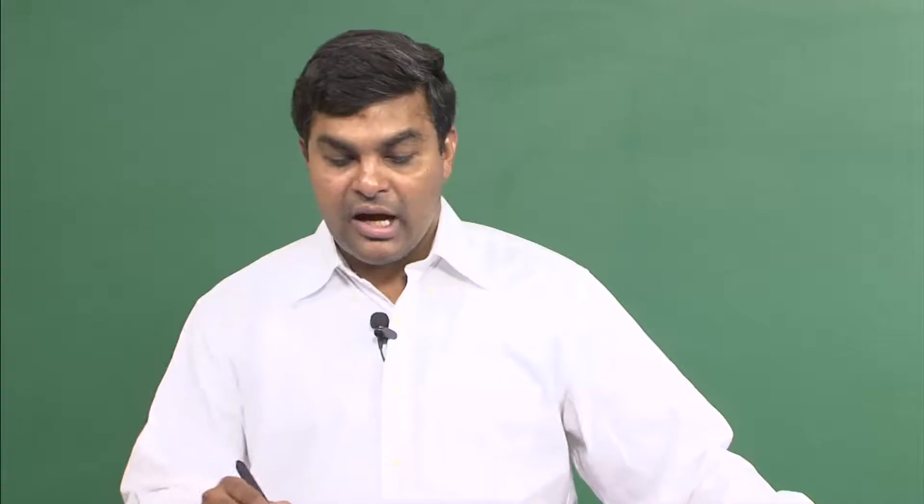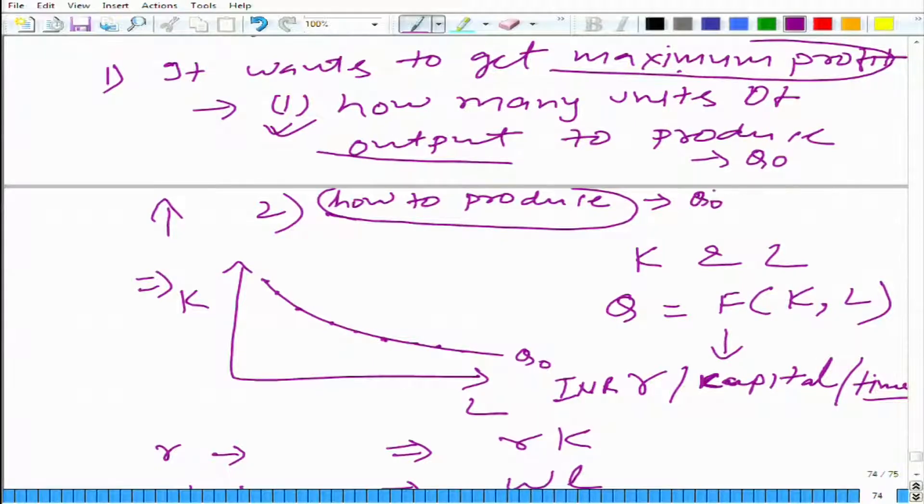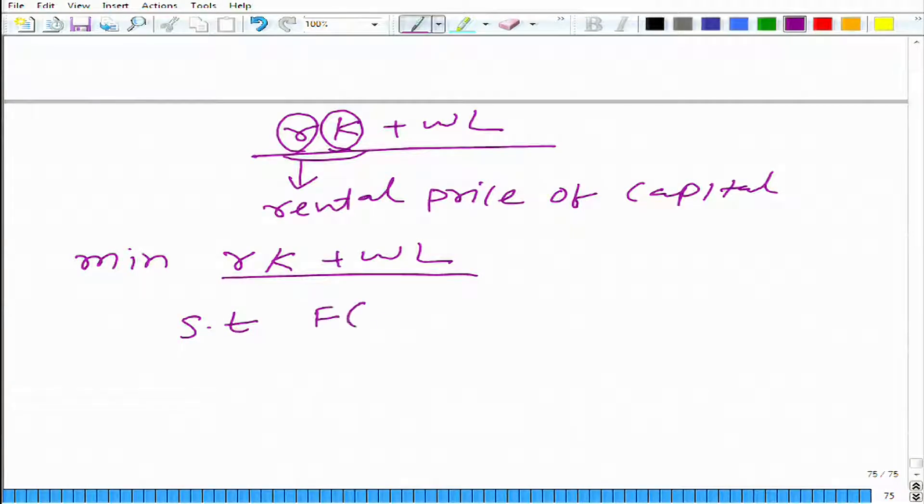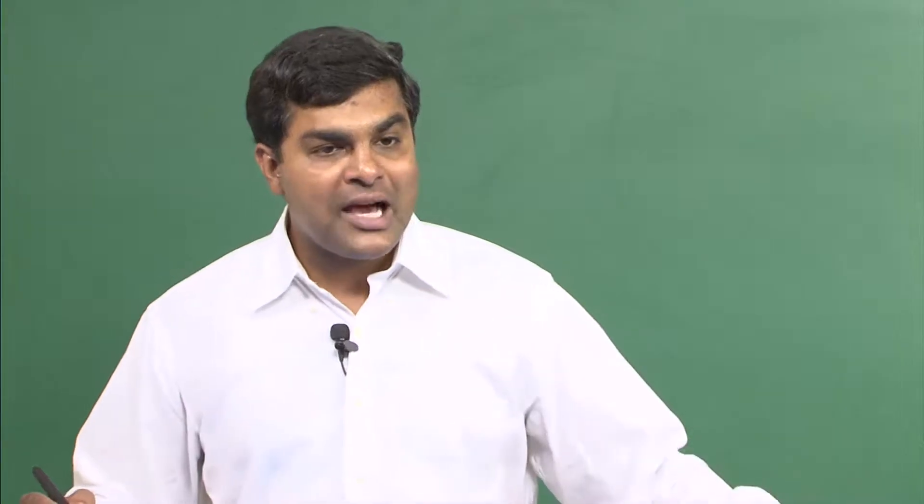What we are interested in is how to produce this q₀, and there are several ways to produce this q₀. This is given: what we have is F(K, L) should be equal to q₀, we have to produce. What we need to do here is how can we minimize this? We have to minimize it with respect to K and L. By changing K and L we can change the cost of production, but we cannot change K and L arbitrarily.